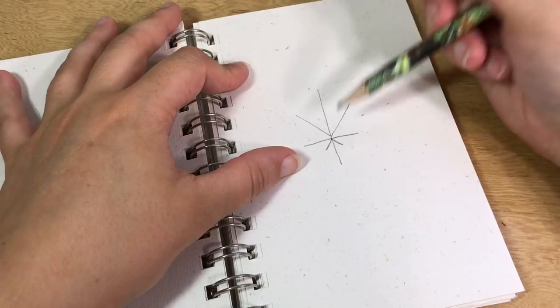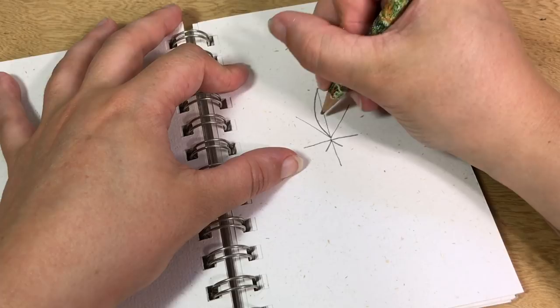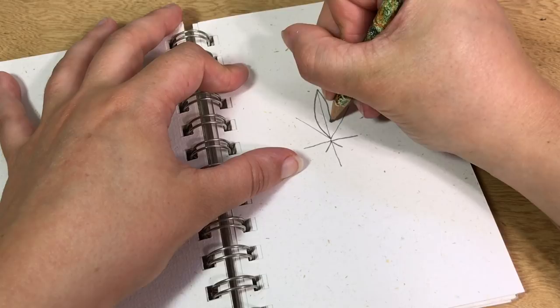the leaf. Starting down at this point, we're gonna do a line that curves out a little bit and then meets the tip of the line. And then you gotta do the same thing but on the other side so it's symmetrical. Start at the top and then curve it out a little bit and then bring it back